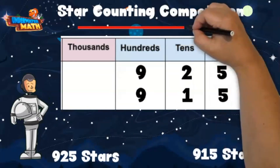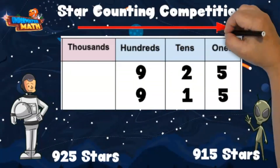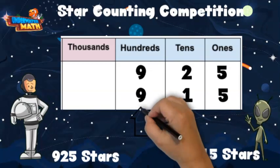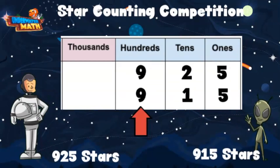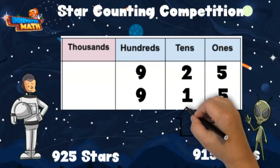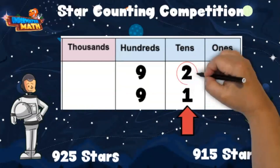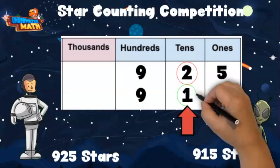When we compare numbers, we want to look at each digit in order from the largest place value on the left to the smallest place value on the right. Both numbers have a nine in the hundreds place, which means they are both the same so far. In the tens place, I have a two and Lenny has a one. I know that two is greater than one.